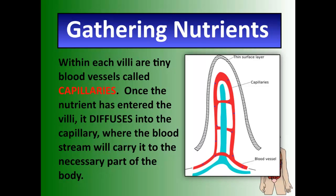Once all those nutrients are absorbed, within each villus are tiny blood vessels called capillaries. The nutrients diffuse through the very thin surface of the microvilli — it's about one cell thick — and then they enter the capillaries. Once they're in the bloodstream, nutrients can be carried anywhere they're needed. This is the most important structure in the digestive system: the villi and their connection to the capillaries. Star, highlight, underline — the villi are of major importance here.